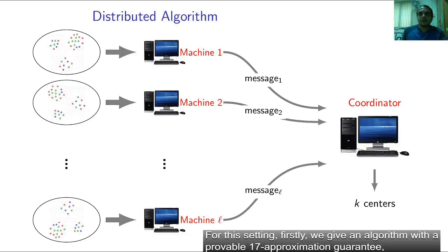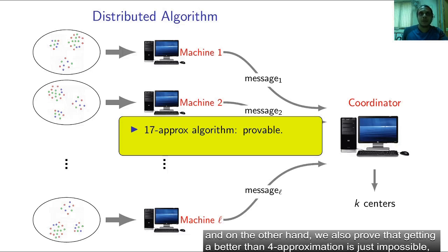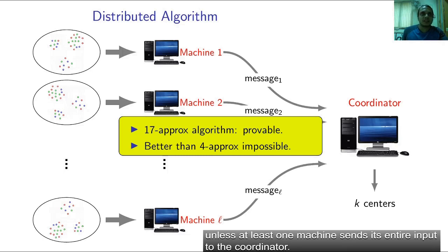For this setting, firstly we give an algorithm with a provable 17 approximation guarantee and on the other hand we also prove that getting a better than 4 approximation is just impossible unless at least one machine sends its entire input to the coordinator.